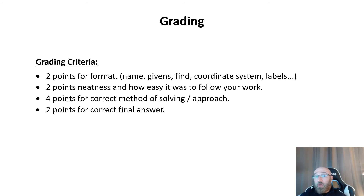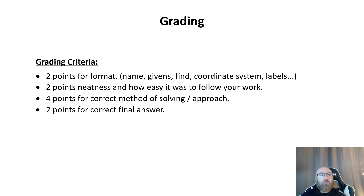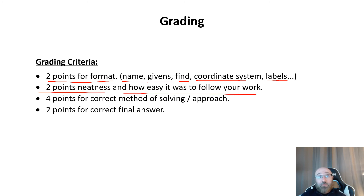When grading the other group's solution to your problem, use the same grading criteria used for homeworks and exams this semester — the same 10-point scale. Two points are for format: did they provide their name, group name, the givens, the finds, the appropriate coordinate system, and necessary labels? Is it neat and easy to follow? Four points are for the correct method, approach, and governing equations. And the last two points are for whether they got the answer correct.